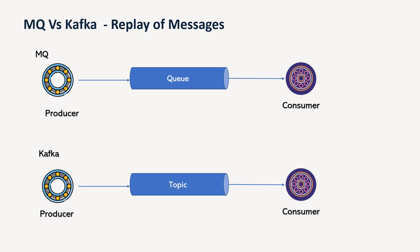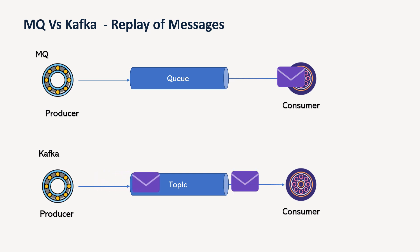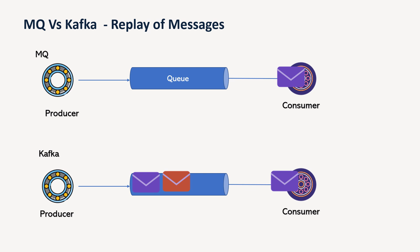Next is the replay of messages. In MQ, the message produced by a producer is read once by the consumer and not stored, so there is no replay capability. Once processing is successful, you are not able to replay or reprocess the same message. But in Kafka, you are able to replay because messages are stored in the topic. If you want to process a message again, you can use its sequence number or unique identifier to read it from the topic and process it again. So replay capability exists in Kafka but not in MQ.